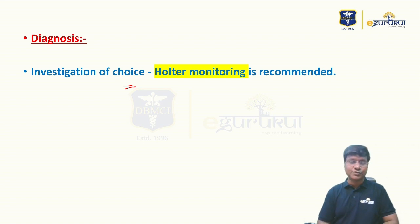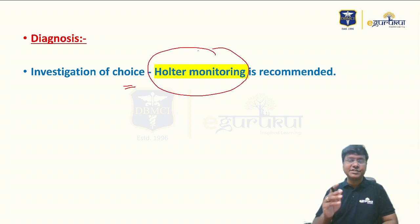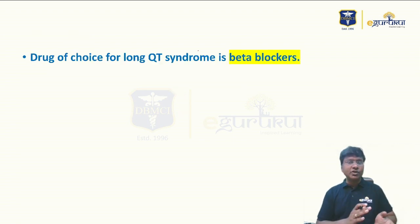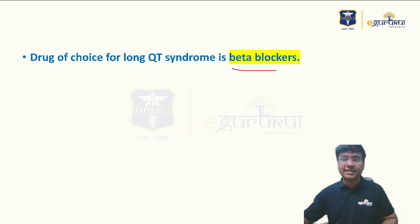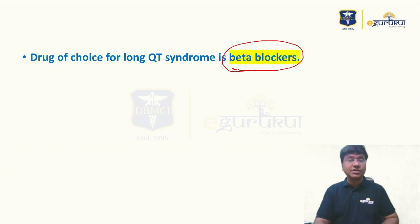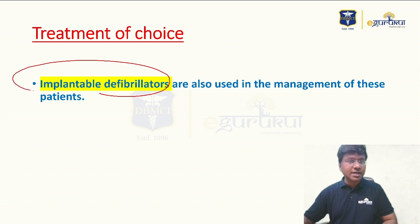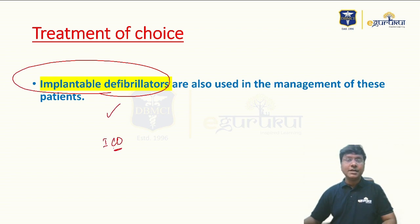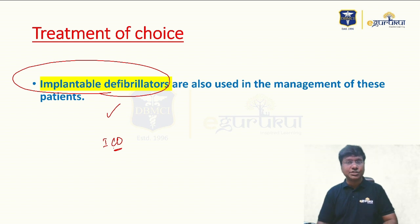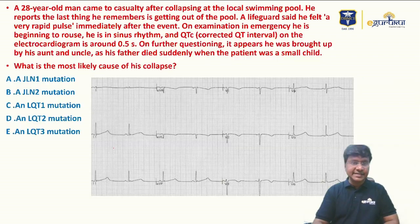The investigation of choice is not the standard ECG alone, since it may be normal. Therefore, Holter monitoring for 24 hours is recommended to confirm the diagnosis. The drug of choice is sotalol, a beta-blocker, but drug treatment alone is often insufficient. The treatment of choice is the implantable cardioverter-defibrillator (ICD), which ablates any abnormal ventricular arrhythmia.